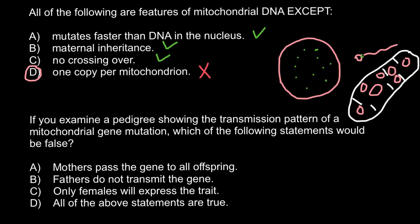Next question: if you examine a pedigree showing the transmission pattern of a mitochondrial gene mutation, which of the following statements would be false? Answer A: mothers pass the gene to all offspring — this is true. Mothers pass the mitochondria to both males and females. If the egg cell has an X chromosome and the sperm also has an X chromosome, this egg would develop into a female; if the sperm has a Y chromosome, the fertilized egg would develop into a male with X and Y chromosomes defining maleness.